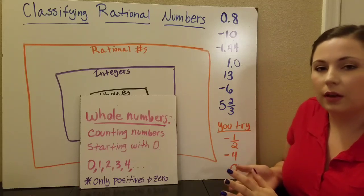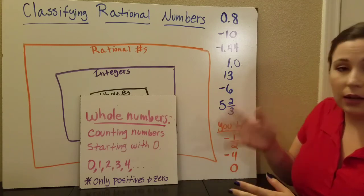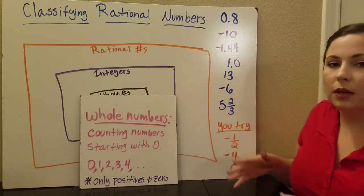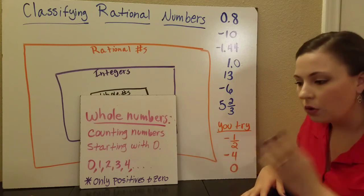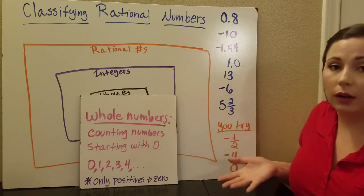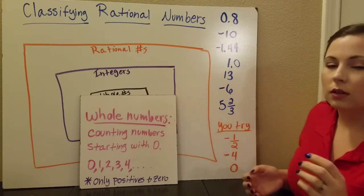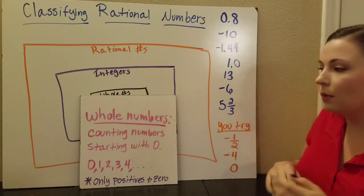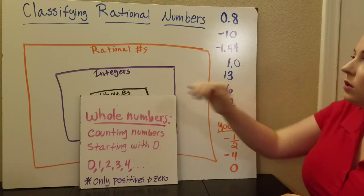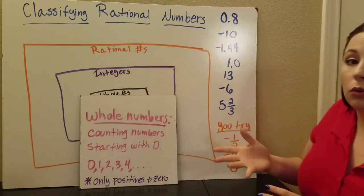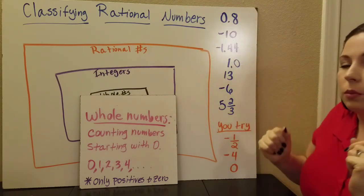Now we're going to learn about classifying rational numbers. Let's break that down. Classifying means grouping — mathematicians like to put things into groups, we like to have things organized. Then rational — that's a certain kind of number I'm going to give you the definition for in just a minute. I talked about grouping the rational numbers, and that's a very large group of numbers.